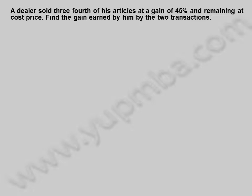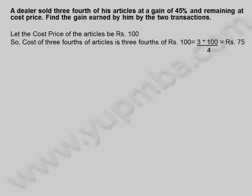A dealer sold 3/4 of his articles at a gain of 45% and the remaining at cost price. Find the gain earned by him by the two transactions. Let the cost price of the articles be 100 rupees.